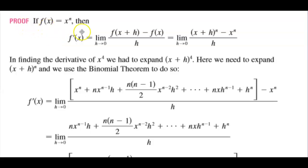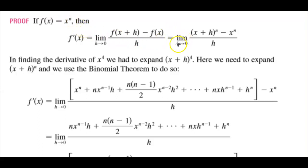Proof. If f of x is equal to x to the n, then f prime of x, or the derivative of x, is equal to the limit as h approaches 0 of f of x plus h minus f of x over h. So if we want to apply the n, this is going to be the limit as h approaches 0 of x plus h to the n minus x to the n over h.